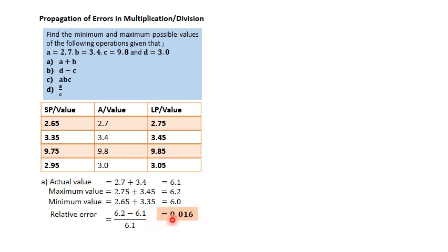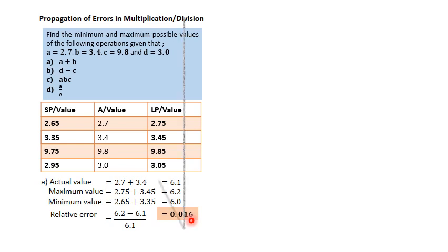Please note that this same answer of 0.016 would have been obtained using (actual − minimum) ÷ actual. That is true for addition, and we shall also see it is the same for subtraction.